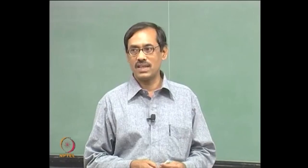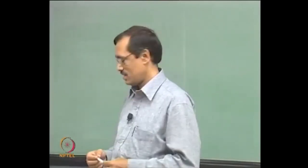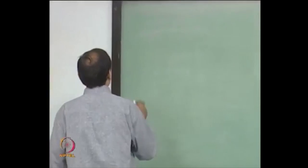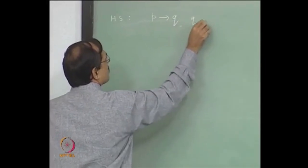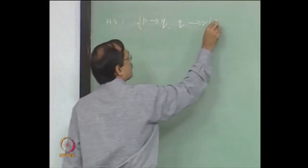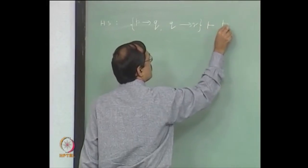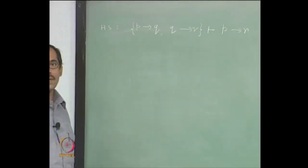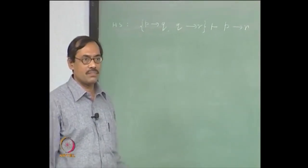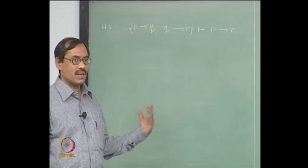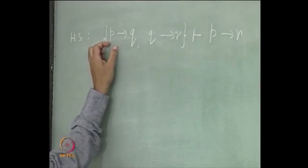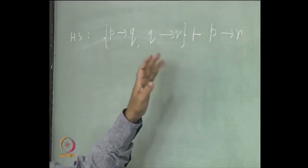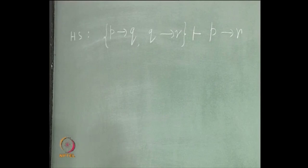For example, we have proved Hypothetical Syllogism (HS) in the last lecture. HS says that p implies q, q implies r, entails p implies r. This is what hypothetical syllogism says. We have proved this consequence. Now, once you see that, this is a consequence scheme. That means you substitute any other propositions in place of p, q, r — whatever you get, that is also provable.